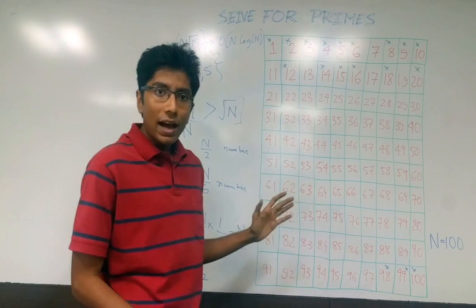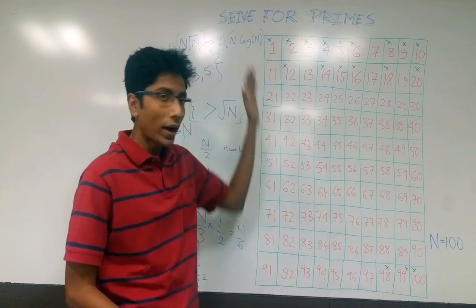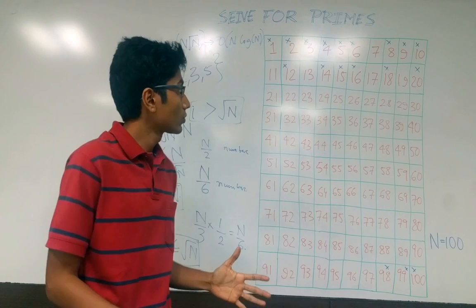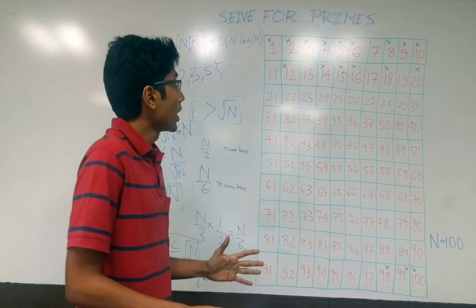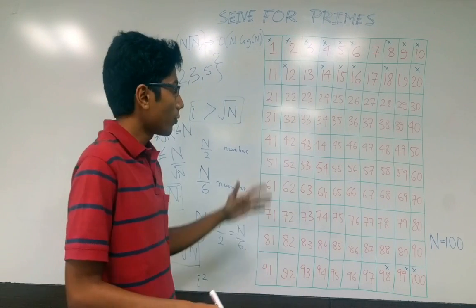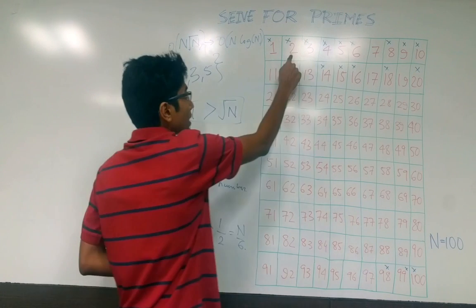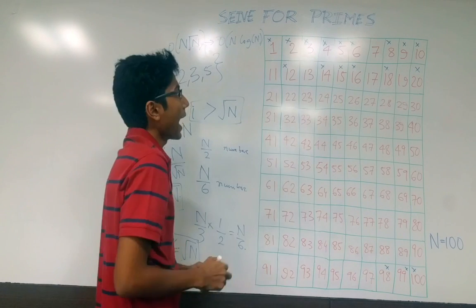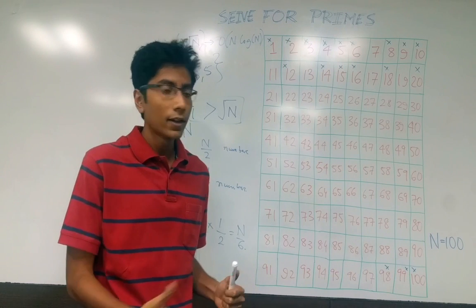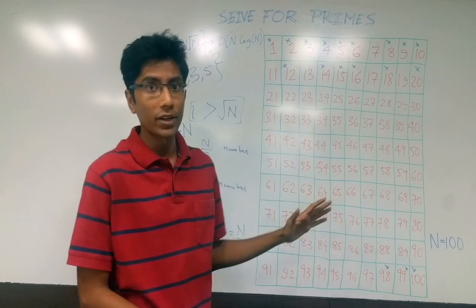Now that we have a technique to find all prime numbers in a given range 1 to n, let's see how we can find the prime factors. Nothing special really — if you are at 2, to find the prime factors of every number divisible by 2, you jump to that number (make a jump of 2) and keep dividing that number while it is divisible by 2.